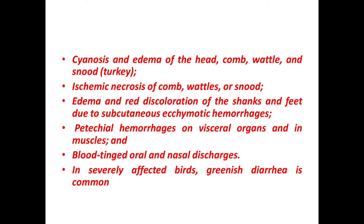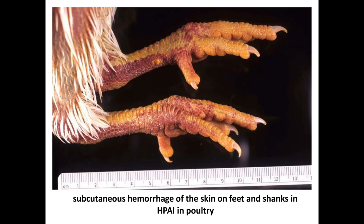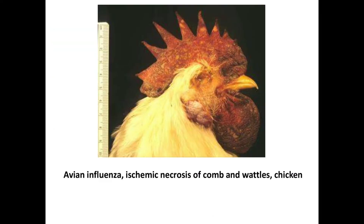Pictures of clinical findings in highly pathogenic avian influenza show subcutaneous ecchymotic hemorrhages of the skin on the feet and shanks of infected poultry. Another image shows ischemic necrosis of the comb and wattles, with necrotic or dead skin visible on the unfeathered parts of the chicken's head.